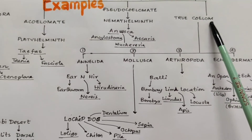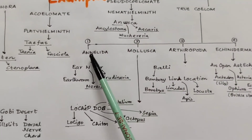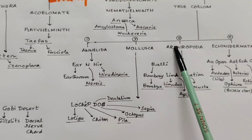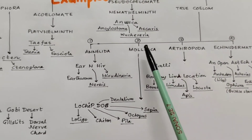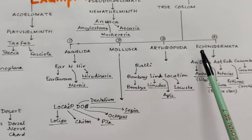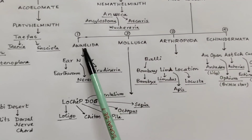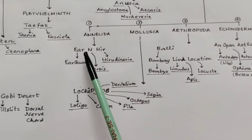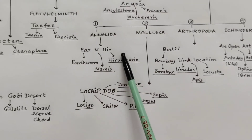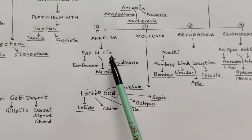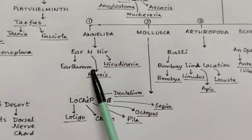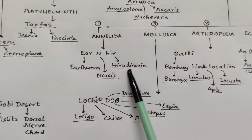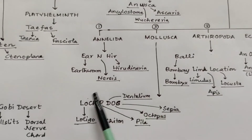Now, having true coelom, they are categorized into four phyla: Annelida, Arthropoda, Mollusca, and Echinodermata. Annelida means ring-bearing animals. We have to remember 'Ear and Ear.' The first 'Ear' for Earthworm, 'N' for Nereis, and the second 'Ear' for Hirudinaria, which is the scientific name for leeches.